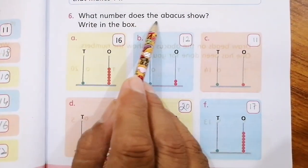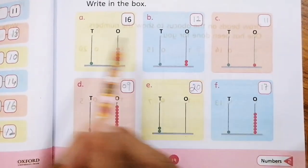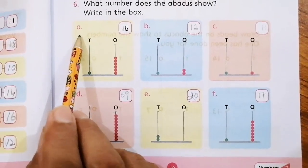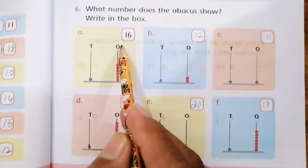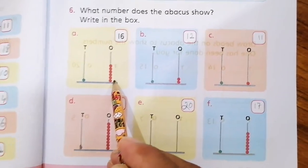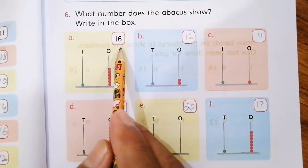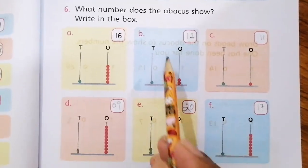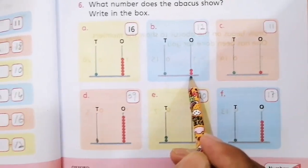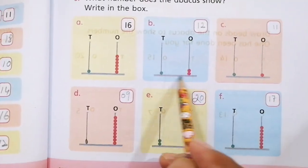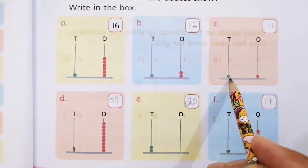What number does the abacus show? Here we have different types of numbers in the abacus. The first one bead is for tens, and in the ones place six beads. So one and six is sixteen. On the B part, there is one bead on the tens place and two beads on the ones place.